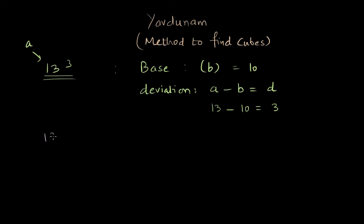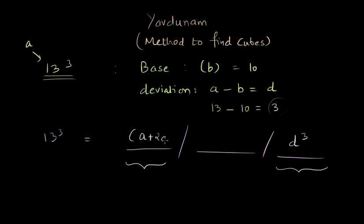Now when we perform the cube of 13, there are three parts of the answer and I'm going to separate those parts with two slashes. The rightmost part of the answer is obtained by cubing the deviation, so basically we put the cube of D here. The leftmost part of the answer is given by A plus 2D, so basically adding the deviation two times to the actual number. The middle part is given by A plus 2D minus B, and this whole thing multiplied by D.